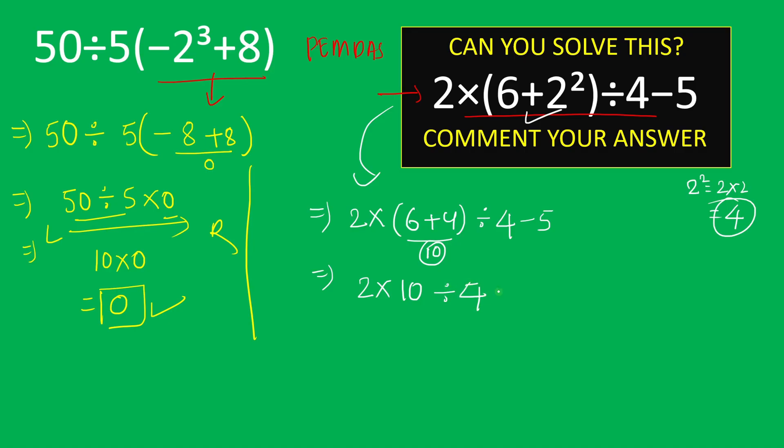Now here we have three operations: multiplication, division, and subtraction. We will do left to right because multiplication and division have the same priority. So first we will do this multiplication part, which is 2 times 10, giving us 20, divided by 4 minus 5. Similarly, 20 divided by 4 will be 5, minus 5.